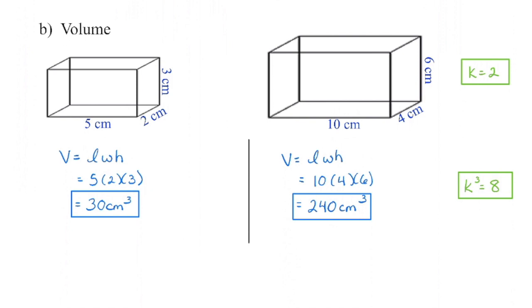There are two ways we can go about getting the new volume. We can use the formula to calculate, or we can say that now we are extending the length and the width and the height — we're applying that scale factor one, two, three times. Think cubic units: we're now going to cube our linear scale factor to get our volume scale factor, which in this case is 8. So if I don't want to recalculate, I can just find the original volume, recognize that the new volume is going to be 8 times as large, and then get the value that way.